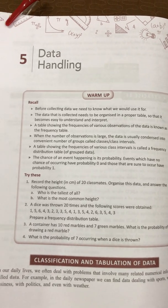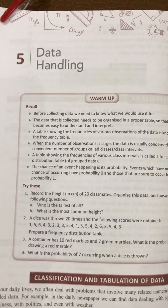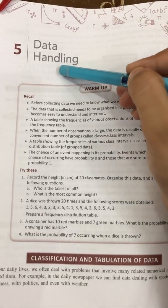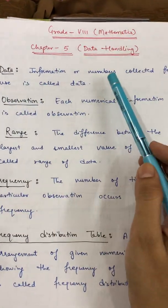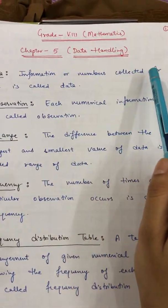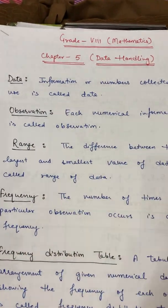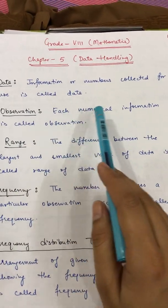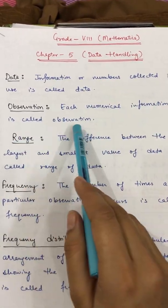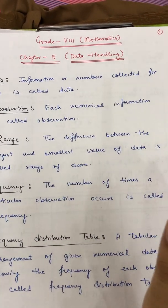Good morning, today we are going to start Chapter 5: Data Handling. In this chapter, first of all we'll discuss some basic terms. Data is the information or numbers collected for use — it is also known as information. Each numerical information is called an observation; numerical means numbers, the information which is given to you in numbers.